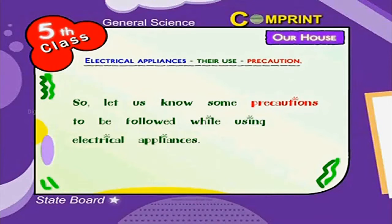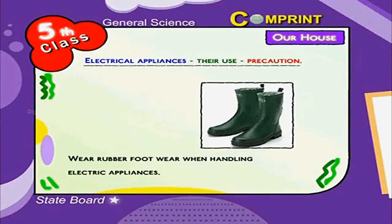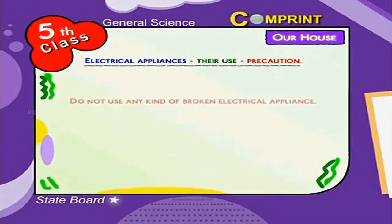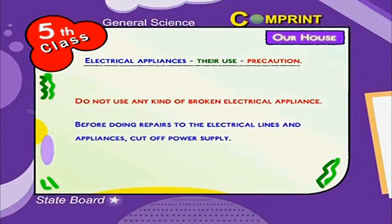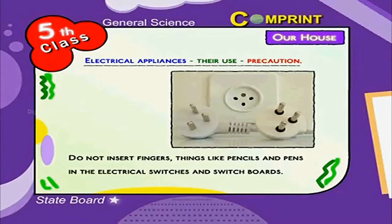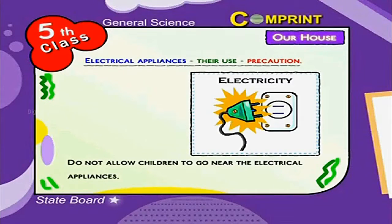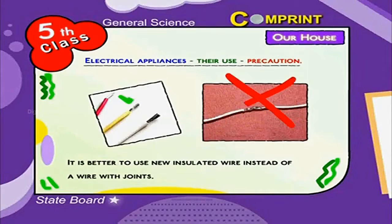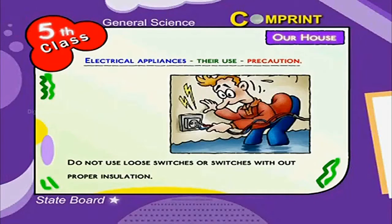Precautions to follow while using electrical appliances: Wear rubber footwear when handling electrical appliances. Don't use any kind of broken electrical appliance. Before doing repairs to electrical lines and appliances, cut off the power supply. Don't insert fingers or things like pencils and pens into electrical switches and switchboards. Don't allow children to go near electrical appliances. It is better to use new insulated wire instead of a wire with joints. Don't use loose switches or switches without proper insulation.